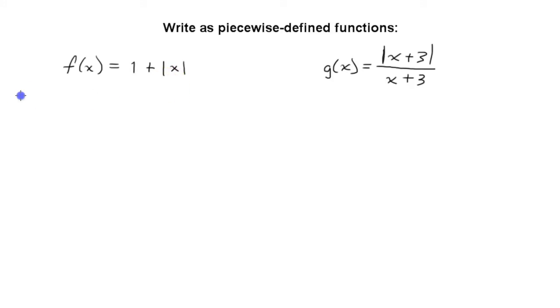Well when x is not negative, that is greater than or equal to 0, it's just going to look the same because if you plug in a positive number for x into an absolute value you just get that positive number back out. So when x is greater than or equal to 0 then the function just looks like 1 plus x.